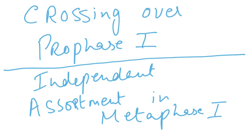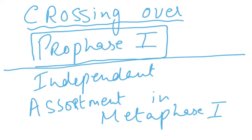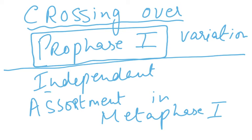The next and last thing to remember is that crossing over, which we are going to study in the next video, takes place in prophase 1 — and that is very important, which results in variation. You also need to remember that independent assortment takes place in metaphase 1. This will also be dealt with in the next video, which will complete the topic of meiosis.